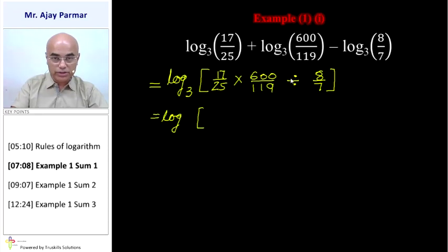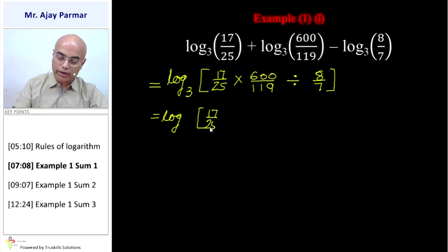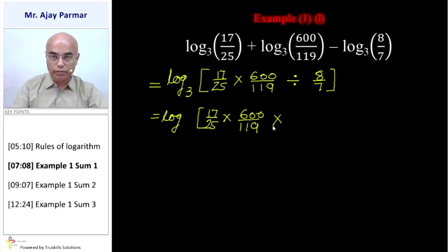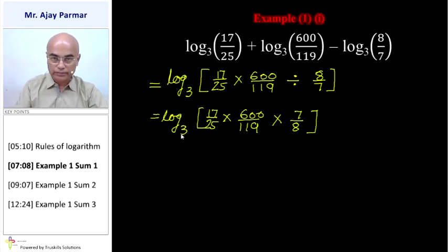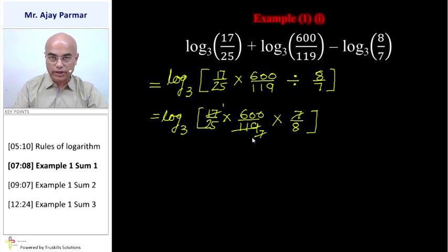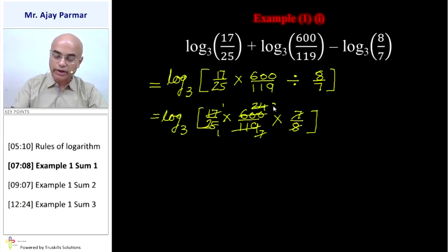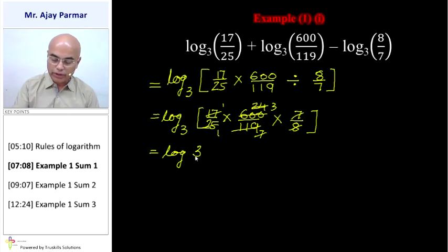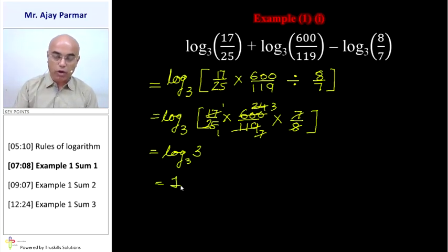Converting the division sign to multiplication: 17 upon 25 multiplied by 600 upon 119, then multiplied by 7 upon 8, to the base 3. Now 17 and 7 cancel with 119, and 25 and 8 cancel with 600, leaving only 3. So we get log 3 to the base 3. Since the log number and base number are the same, log A base A equals 1, so the final answer is 1.